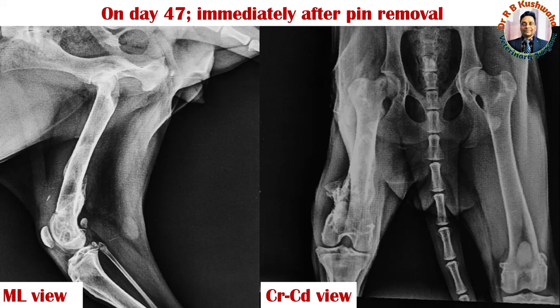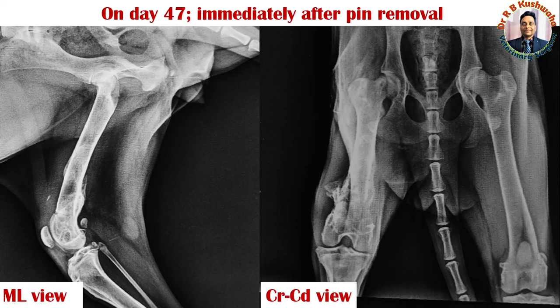With the help of pliers, we removed the pins one by one. First we removed the medial pin — that is, the pin inserted from the lateral epicondyle — and then we removed the lateral pin, meaning the pin inserted from the medial epicondyle. After removal of both pins, we applied a figure-of-eight suture pattern and then applied a bandage.